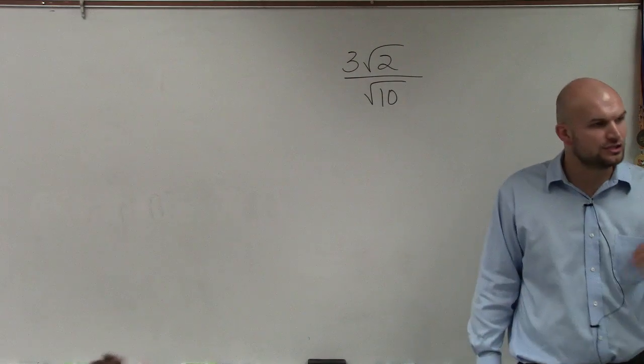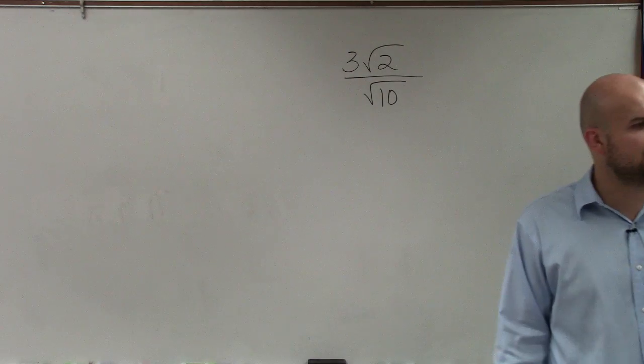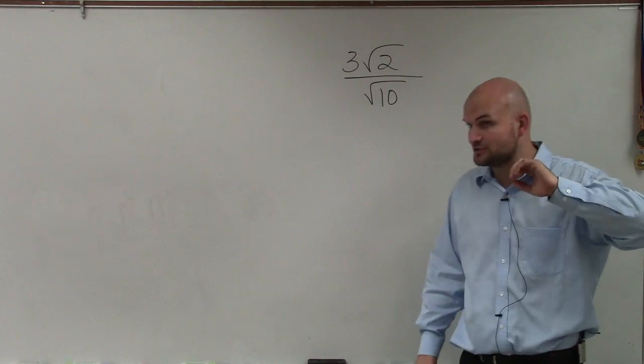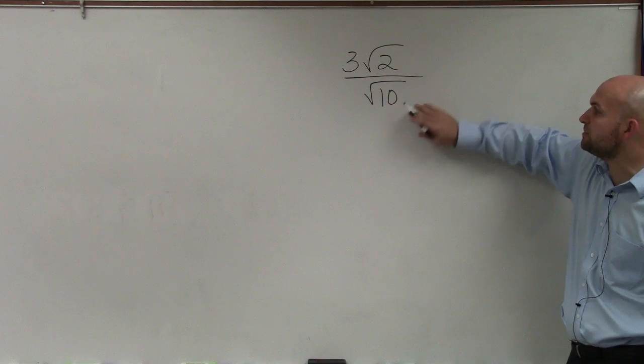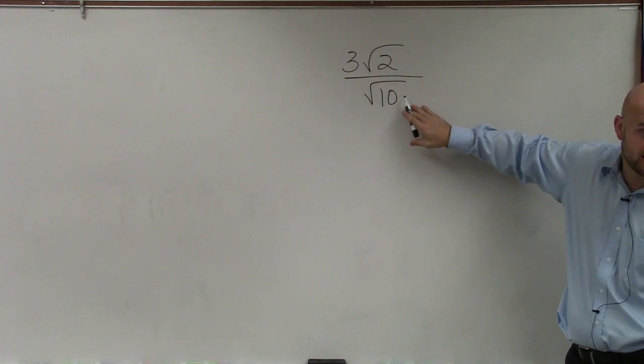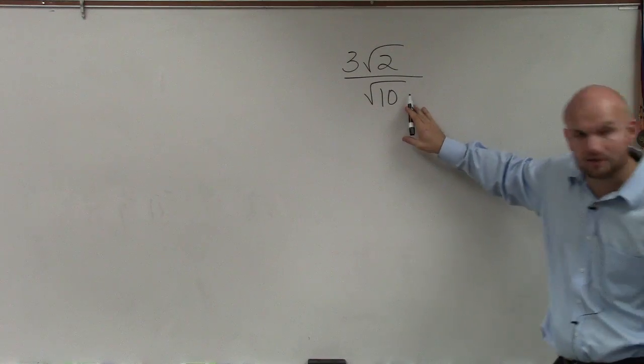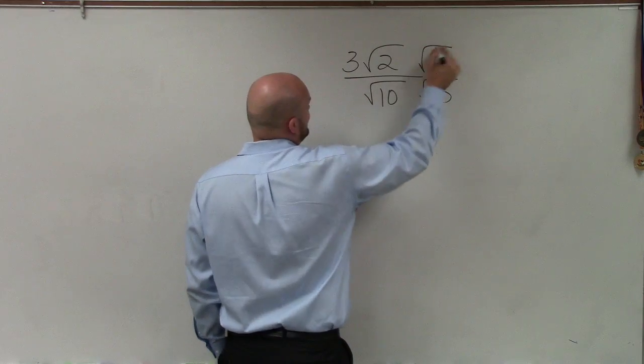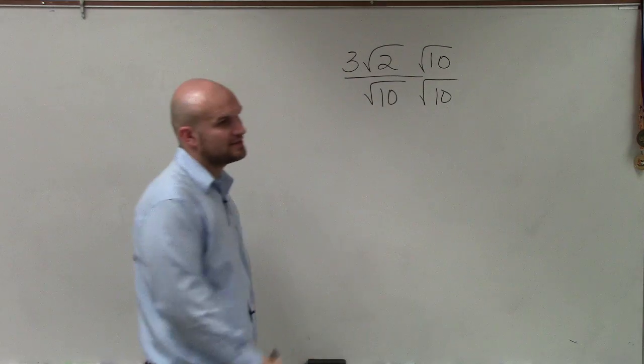Now, we do not want to divide a whole number by an irrational number, nor an irrational number by an irrational number. So what we want to do is get rid of our irrational number in our denominator. To do that, we use a process called rationalizing the denominator. So Brandon, what I'll do to rationalize the denominator is multiply by the square root of 10 on the top and the bottom.